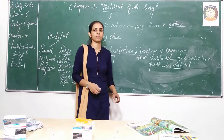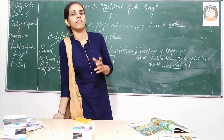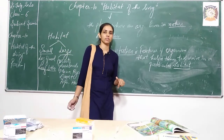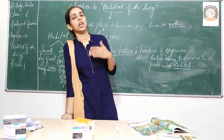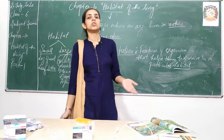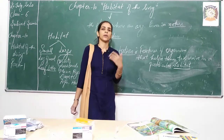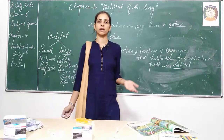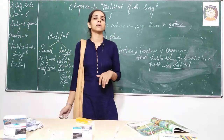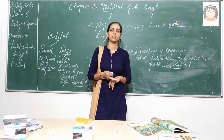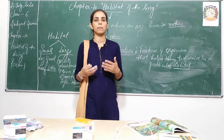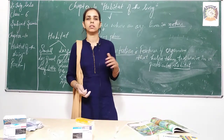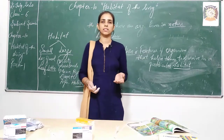For example, you must have observed that the lion is having a brown color, and we know the reason for this. The reason is because the lion is living in grasslands — just to protect themselves and hide from predators, they have this color. In the same manner, lizards and some other animals show camouflage, which means they blend their color with the surrounding environment.